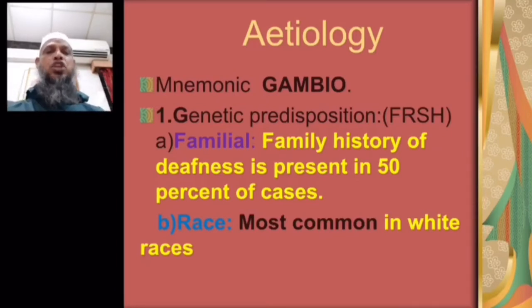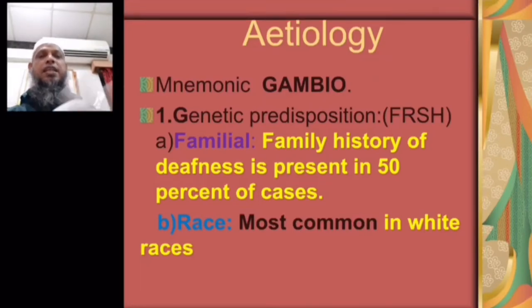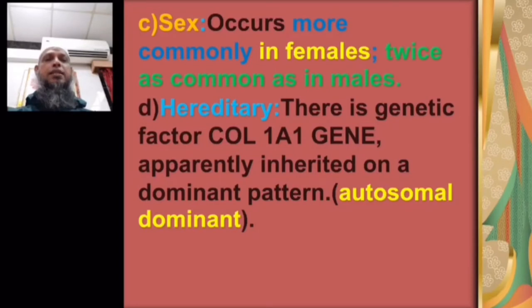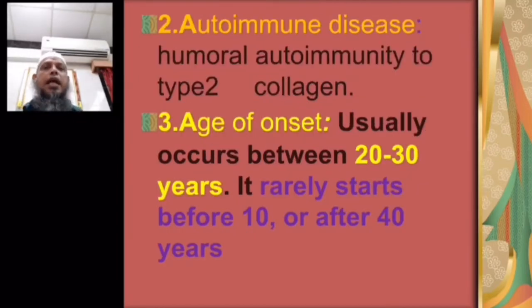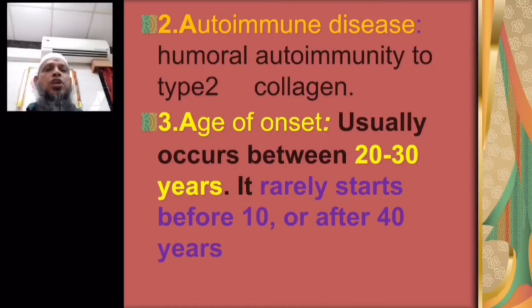Genetic predisposition: it is familial — family history of deafness is present in 50% of cases. Race: most common in white races. Sex: occurs more commonly in females, twice as common as in males. The hereditary genetic factor is the COL-1A1 gene, apparently inherited in an autosomal dominant pattern. Autoimmune disease: there is human autoimmunity to type 2 collagen. Age of onset: usually occurs between 20 to 30 years of age; it rarely starts before 10 or after 40 years.